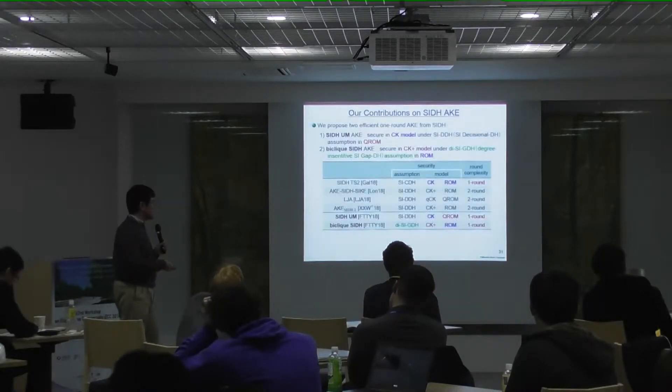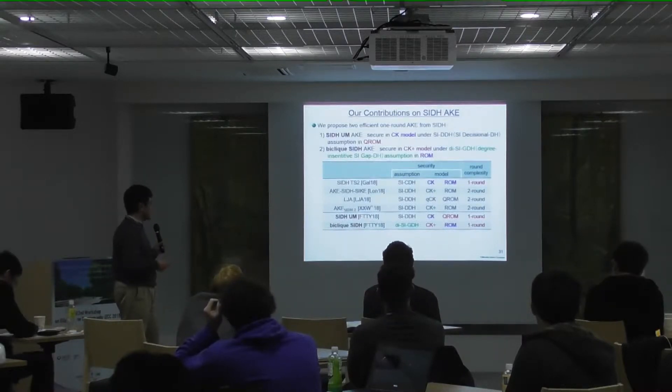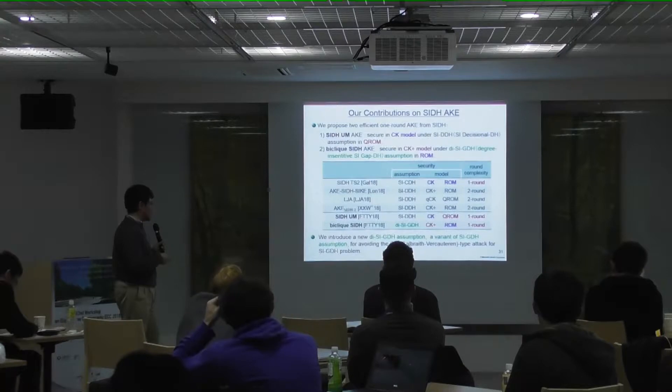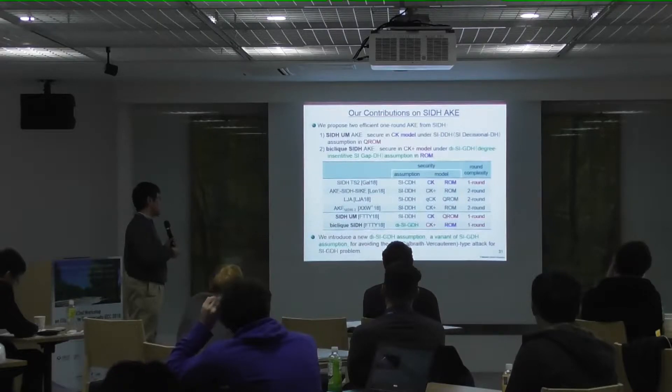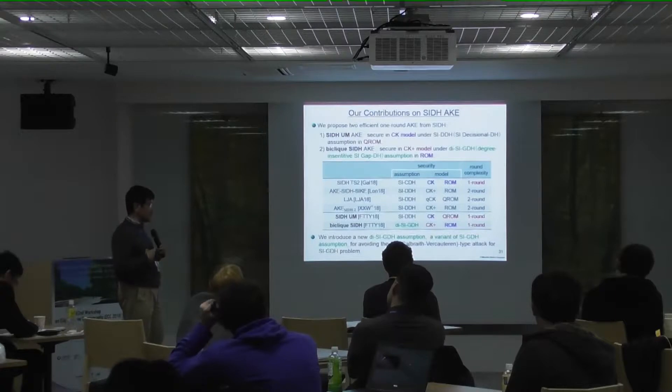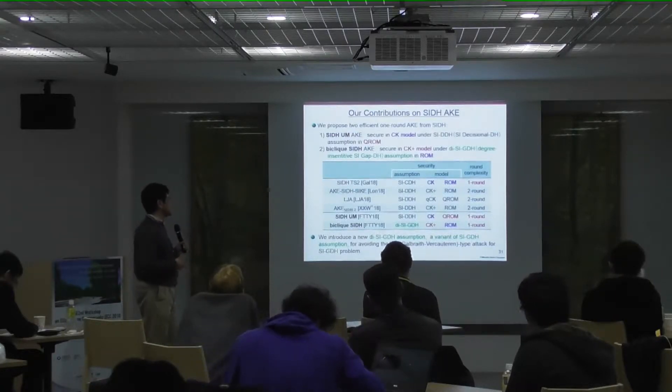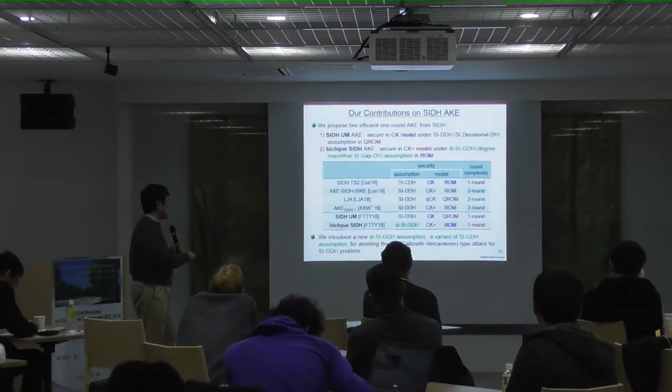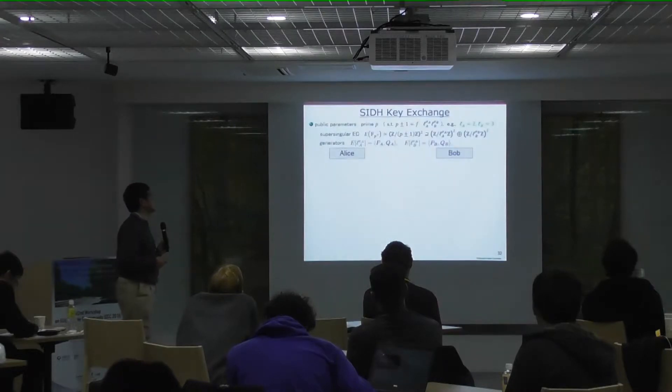So, we have a first one that is CK-secure, and the second one that is CK-plus-secure, and there's some variant of GAP DH problem. We have a new type GAP DH assumption, the degree-insensitive GAP DH assumption.